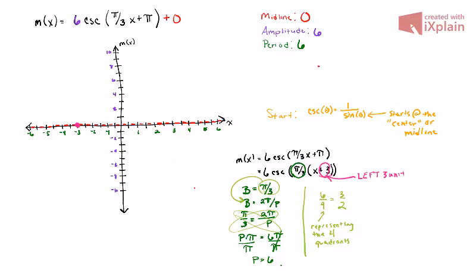From here, we can plot the rest of this. I know that from the starting point, since this cosecant is positive, in other words there is no negative hanging out in front of the 6, I'm going to proceed upward. I'm going to go to the right one and a half units and mirror that amplitude of 6.